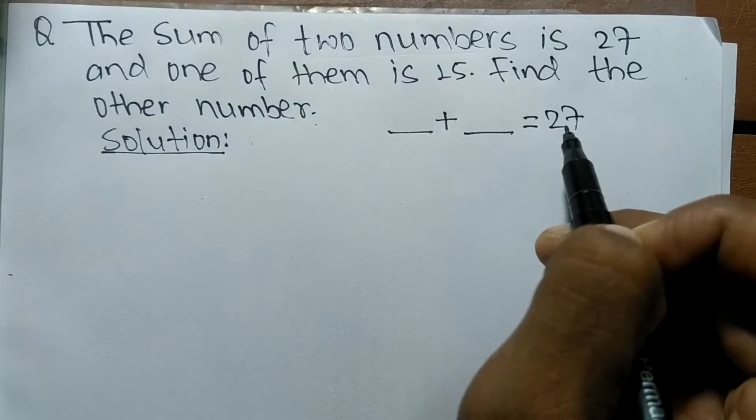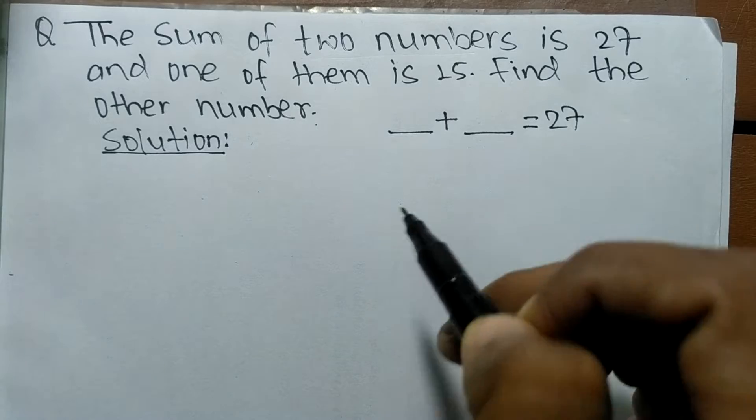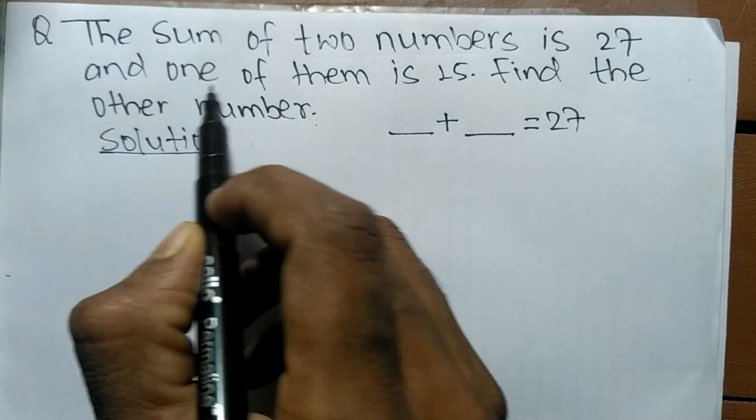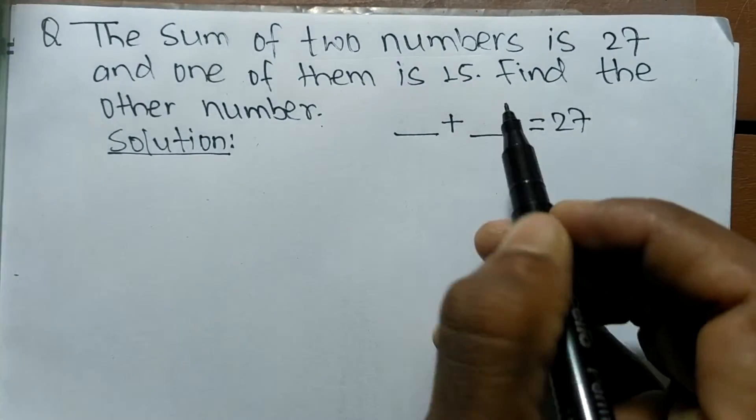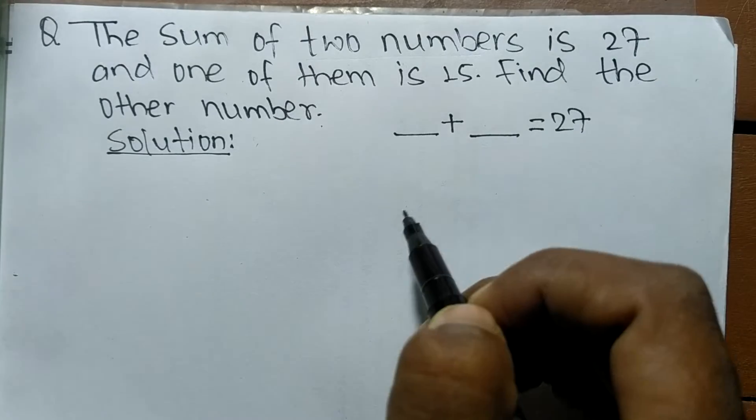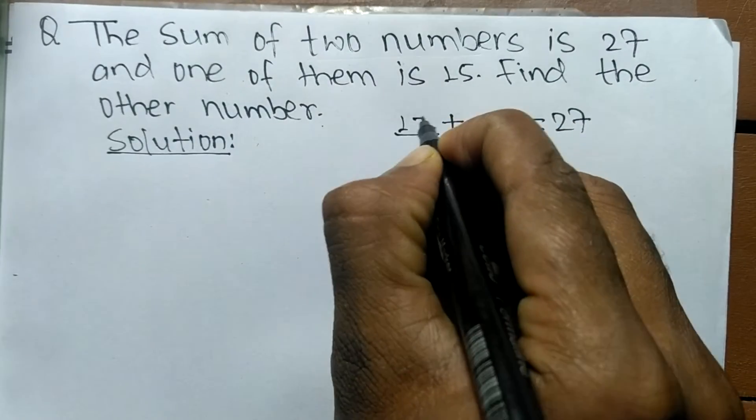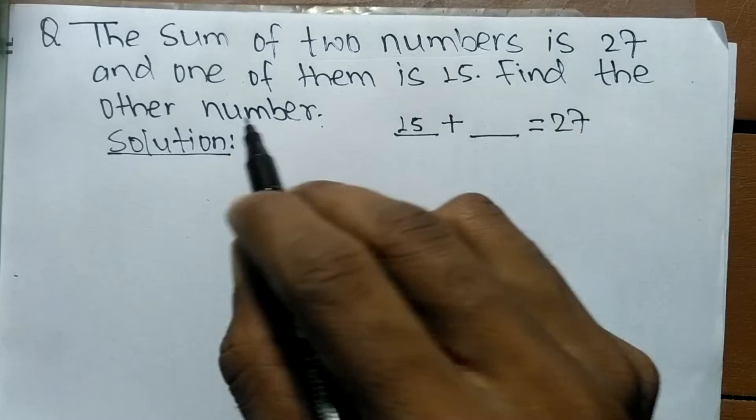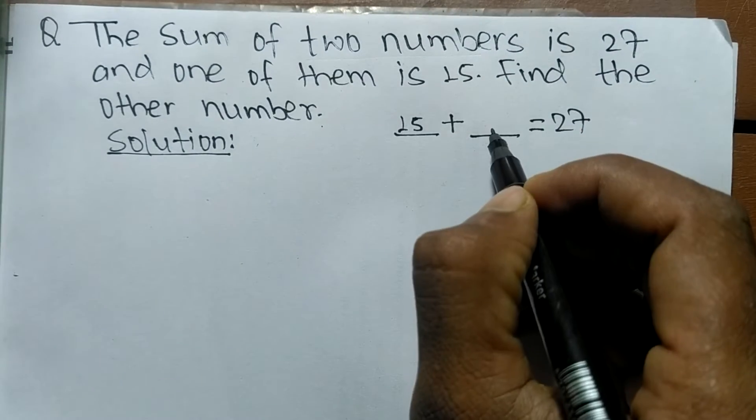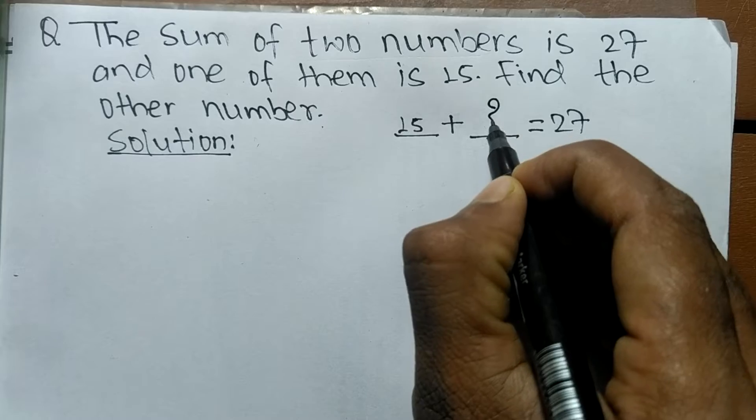We have two numbers and their sum is 27. The second condition says one of them is 15. So among these two numbers, one number is 15, and we need to find the other number.